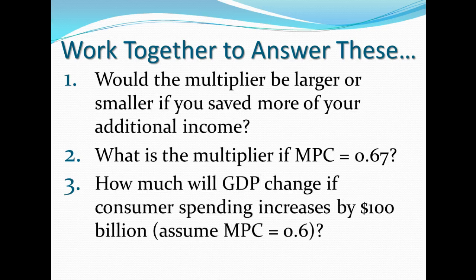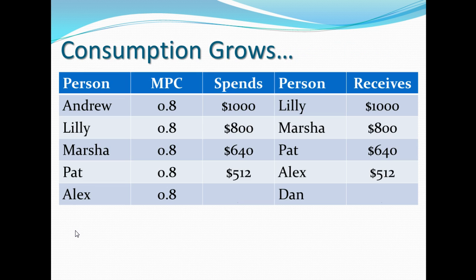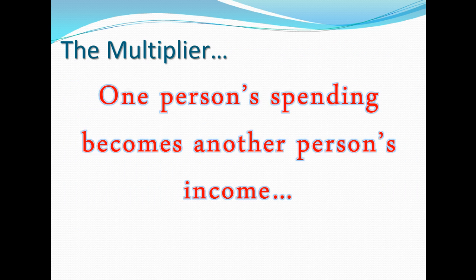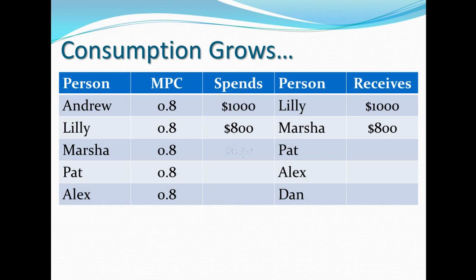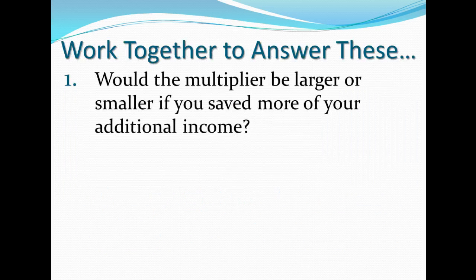How much will GDP change if consumer spending increases by $100 billion? Assume MPC equals 0.6. All you're doing is plugging 0.6 into the multiplier formula — 1 over (1 minus 0.6) — just like I did previously, and then multiplying the result by $100 billion.